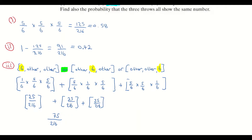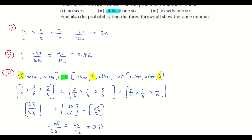You can simplify 75/216 down to 25/72, and if you turn it into a decimal it gives 0.35. So about 35% of the time is when you would expect to get exactly one six when you roll those three dice.